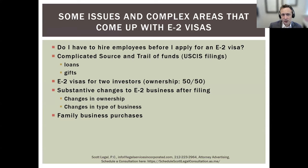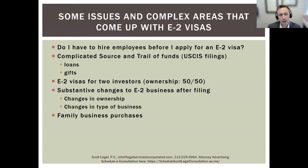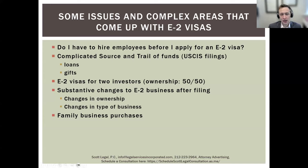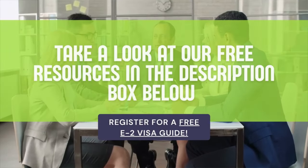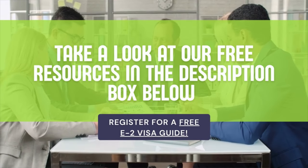Substantive changes to the E2 business after filing is a complicated area. You really define the scope of what your business is doing in the initial application, so if you have any thought of doing something broader, expand the business plan — there's no big downside. If you narrow the scope and then decide to start a coffee shop on the side, you'll need government approval before making that change. Changes in ownership are more binary: if your ownership drops below 50%, you lose E2 status. For family business purchases, make sure you are paying the fair market value. If you get a big discount buying from a parent, the consulate may argue you did not invest a substantial amount. Treat a family business purchase as you would any other — bring in accountants, lawyers, document everything, and show it's the fair market value.